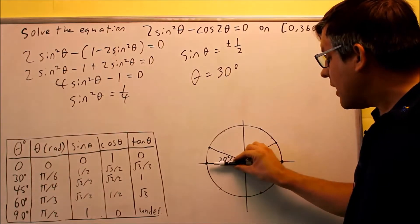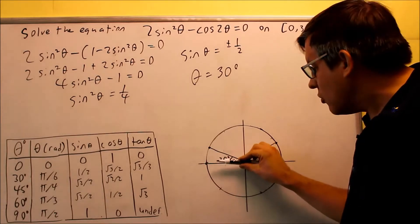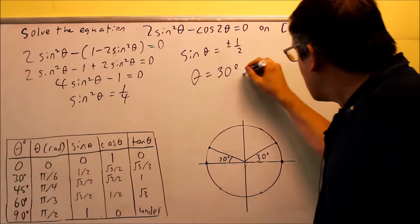I have another angle right there that's going to be 30 degrees. To get this angle, it's 180 and then we subtract the 30 degrees back.